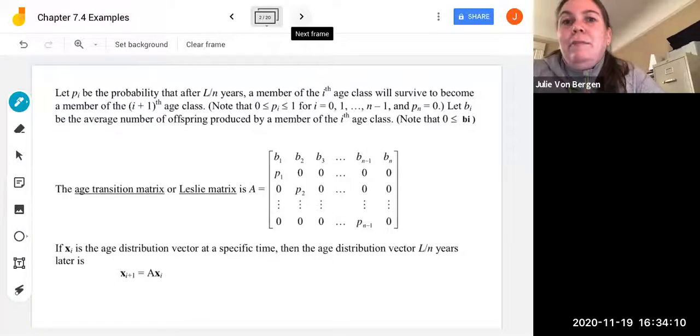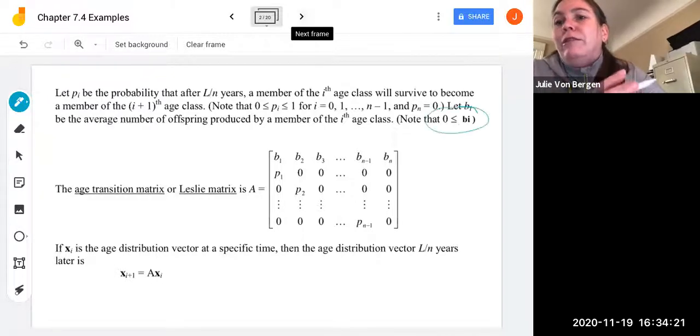We're going to let bi be the average number of offspring produced by a member of the ith age class. And then it's important to note that these are always going to be positive values for the bi's. So they're always greater than or equal to zero.